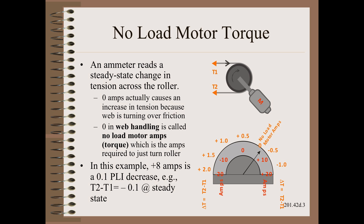Recall from the drive section of Web101 the concept of no-load motor torque. It is the torque required on the motor so that no tension change is seen on the web going over that point. The value of the torque is the sum of the motor and roller drag and other sources of friction, but most especially of the gearbox that is used as a speed reducer for the motor. All drive engineers should know how to find out the amount of torque required to match web speed versus machine speed, but with no web present.